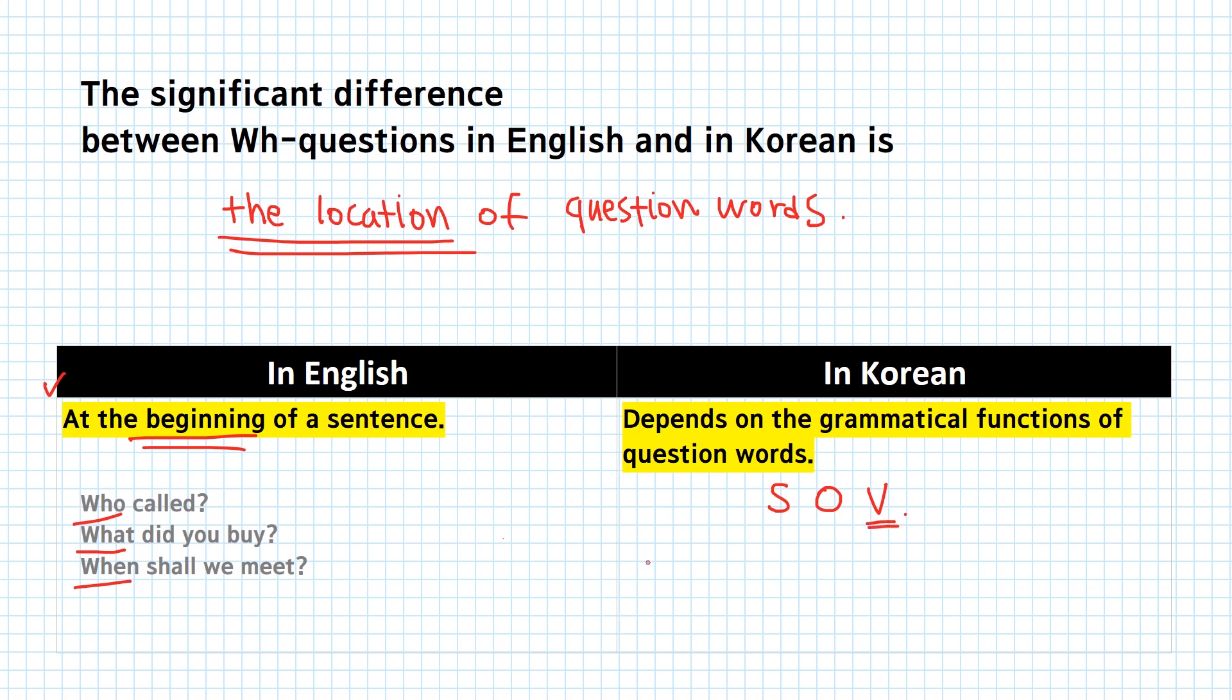So if a question word is used as a subject, then it should be placed in the location of the subject, meaning at the beginning of the sentence. For example, who called? In Korean, it would be 누가 전화했어요? Here, 누가, who is located at the beginning of the sentence. And what did you buy?